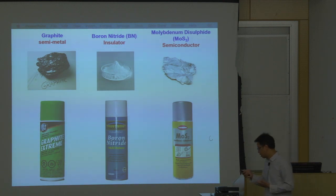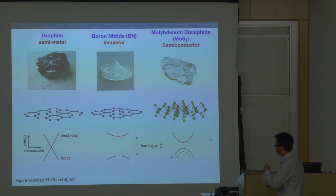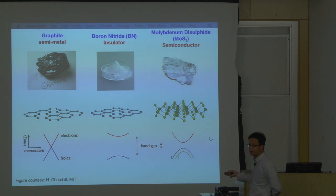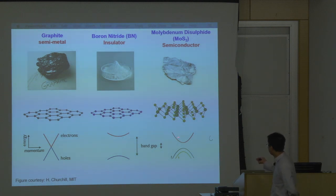Because the layers are coupled weakly, they can slide along each other very well, making these materials very good lubricants. But for us, it has more profound meaning: we can exfoliate one monolayer of this material and study their electronic properties. In monolayer form, we call graphite graphene, which is a semi-metal with a direct cone electronic band structure. Boron nitride monolayer is still an insulator with a band gap of about 6 eV. MoS2 in monolayer form has a direct gap, in contrast to the indirect gap in the bulk, with a band gap of about 2 eV.